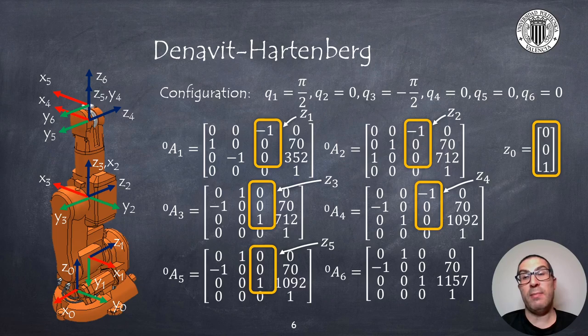Also to obtain the matrix A₃₀ then we can obtain it by multiplying the matrix A₂₀ with the matrix A₃₂ and so on.